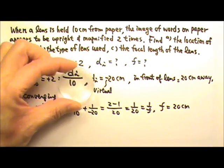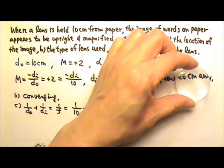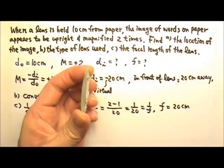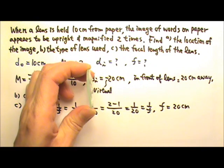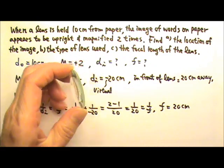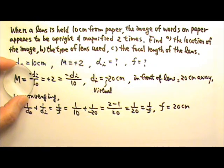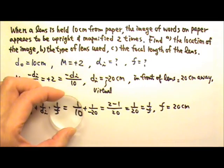This is what happens when we use a converging lens as a magnifying glass. Here I have a converging lens. As you can see, it is thicker in the middle. When I hold this lens really close to the paper, I get magnified, upright images.